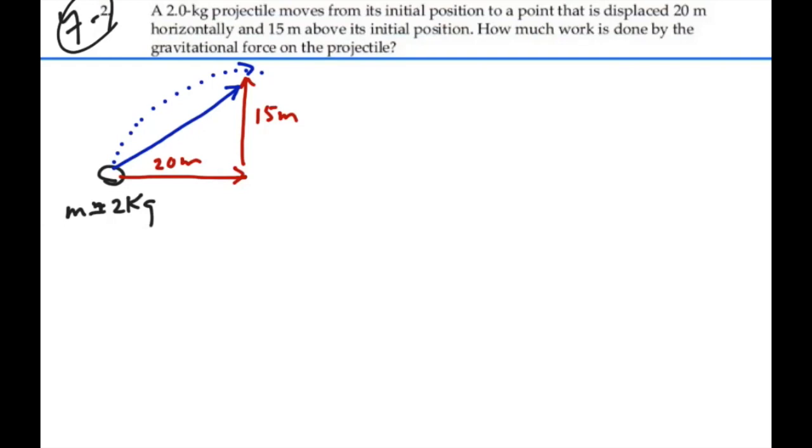How we actually got there along this parabolic path is not going to matter as far as the displacement, because displacement is your final position minus your initial position. We could describe this displacement in terms of components as 20i plus 15j meters. That is our displacement in terms of vectors.